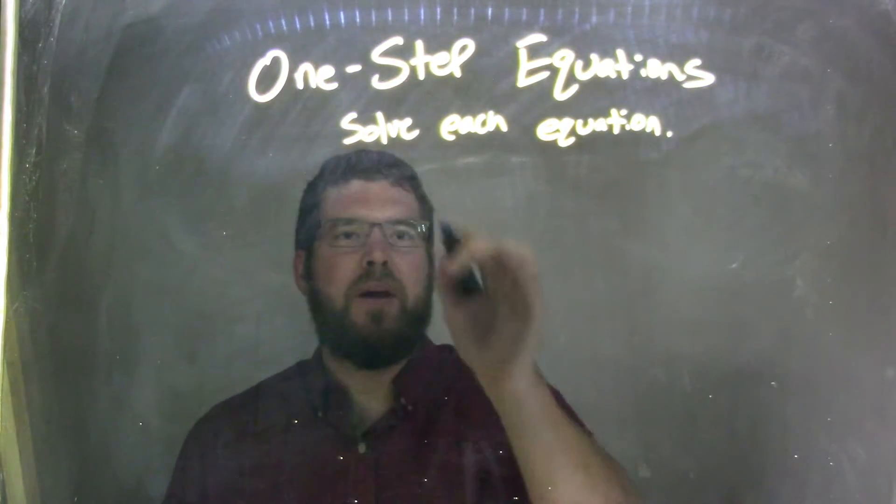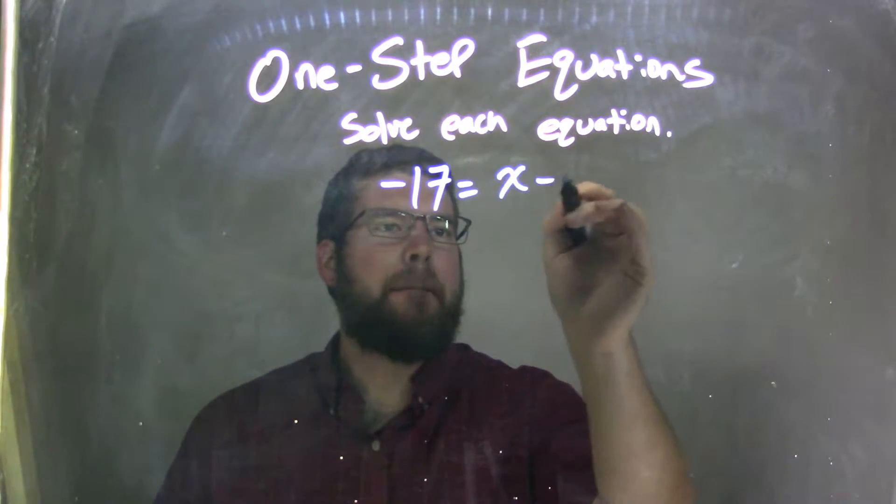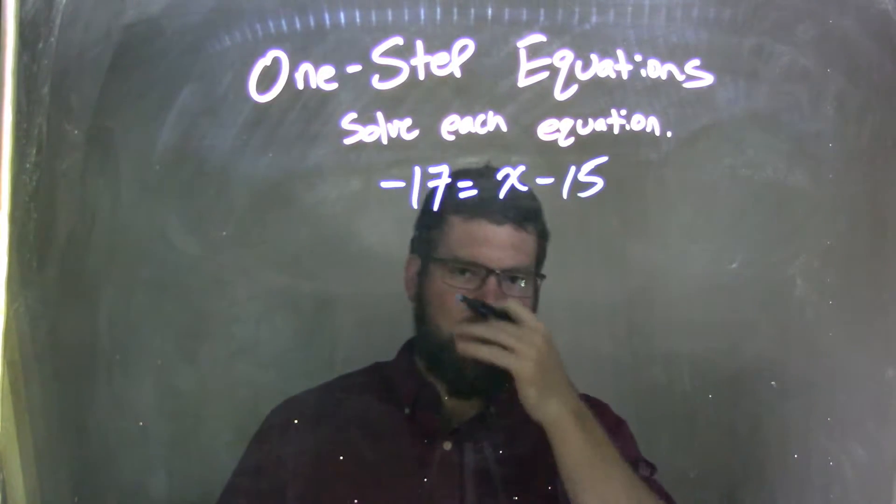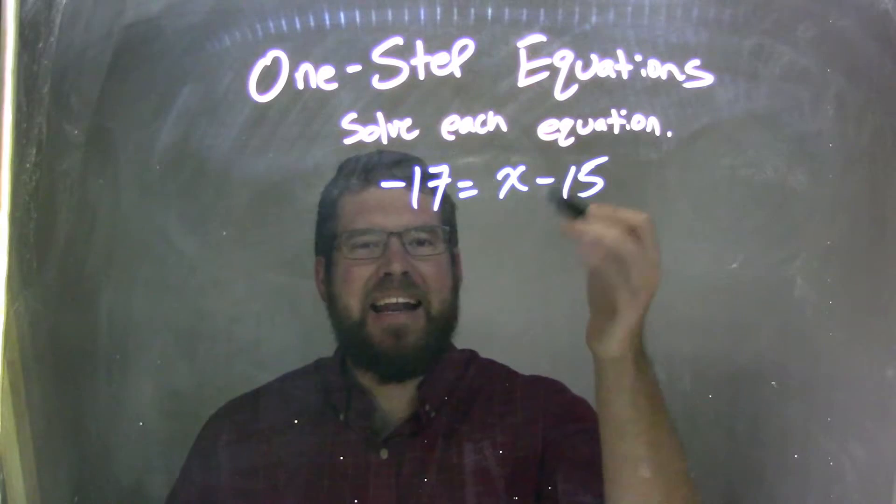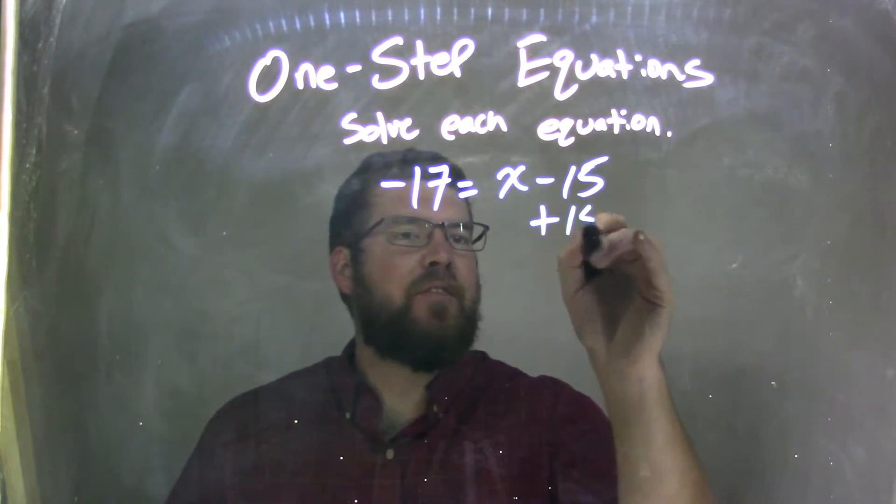So if I was given this equation, negative 17 equals x minus 15, well, pretty simple so far. I have a minus 15, and to get x by itself, opposite of subtraction is addition, so I'm just going to add 15 to both sides.